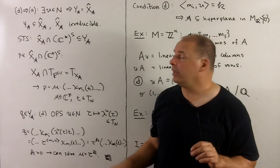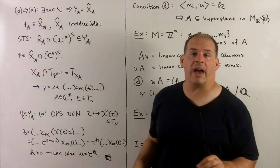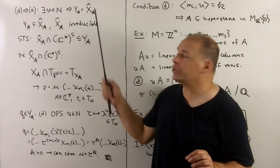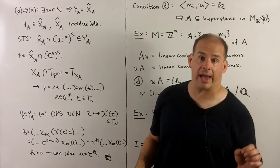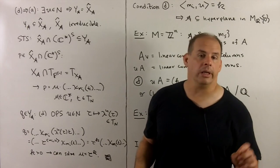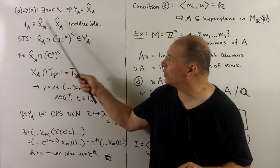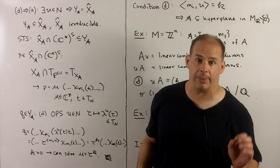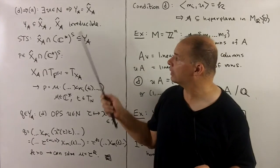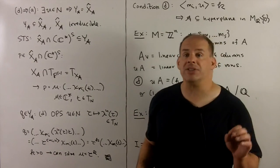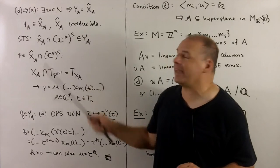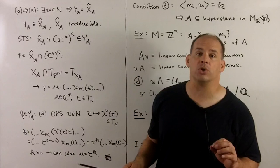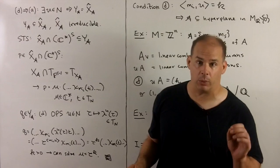Let's show that D implies A. We assume we have our one-parameter subgroup u with the technical condition. We want to show that y sub a is equal to the cone over x sub a. In general, y sub a is containing the cone for x sub a, and the cone for x sub a is irreducible because x sub a is. Thus, it suffices to show that the cone over x sub a intersects C star to the s is contained in y sub a. Then we can take the Zariski closure of both sides to get the containment that we want.